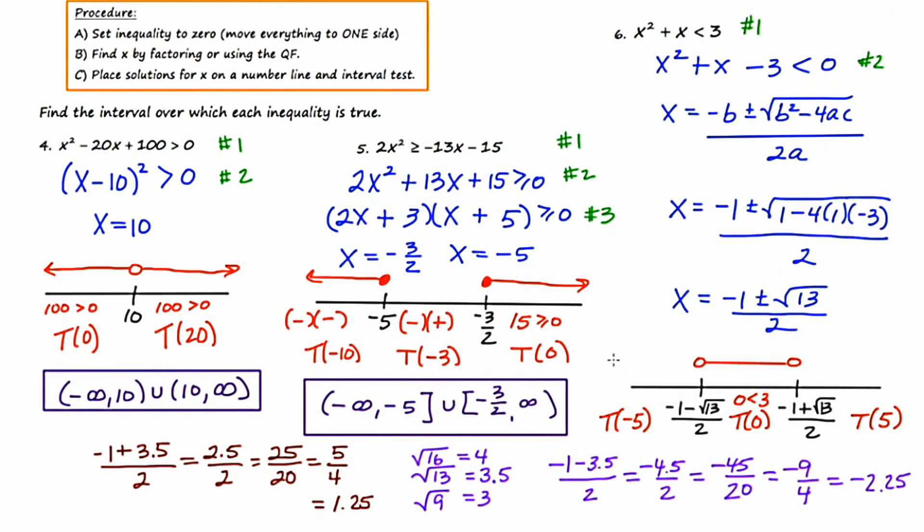Now let's plug in negative 5. If I plug in negative 5, I get 25 minus 5, which is 20. Well, is 20 less than 3? The answer is no, so that's not going to be shaded.